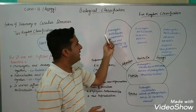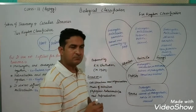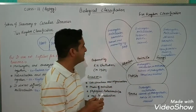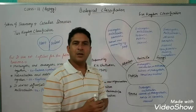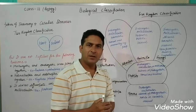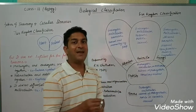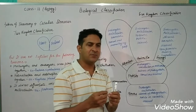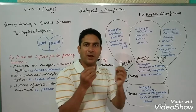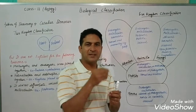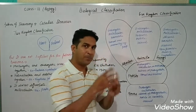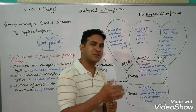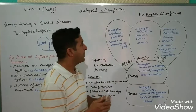Kingdom Plantae consists of eukaryotic, multicellular organisms. They are non-motile — they cannot move from one place to another. They can reproduce sexually or asexually through vegetative propagation, meaning they can give rise to a new plant through their leaf, stem, or root — these plant parts come under vegetative propagation, which is the asexual mode of reproduction in plants.